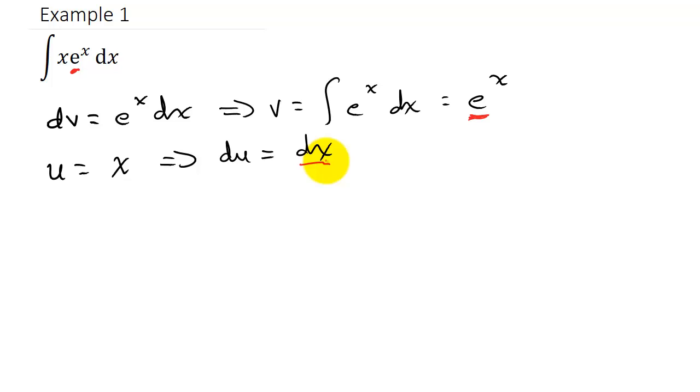Okay, all right, so now we can do integration by parts. The rule for integration by parts says that the integral of u dv is equal to u times v minus the integral of v times du.